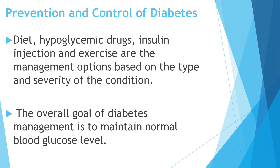How to prevent and control diabetes? People should be very careful with their diet. Proper diet, consumption of hypoglycemic drugs, insulin injection and exercise are options to control and prevent the severity of this condition. The overall goal of diabetes management is to maintain a normal blood glucose level.